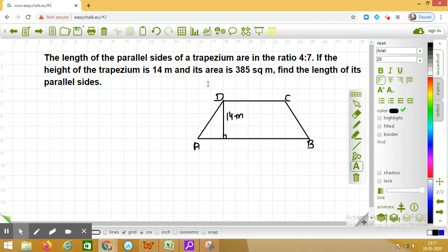Now in this question it is given that parallel sides are in the ratio 4 is to 7. So I am going to assume, let the common ratio be x. So the sides of the trapezium will be 4x and 7x.